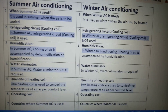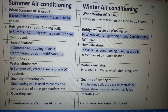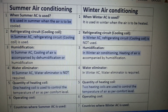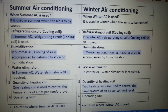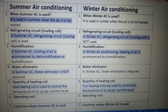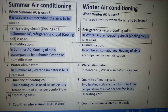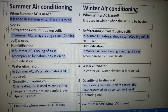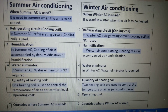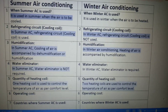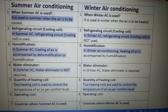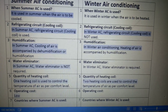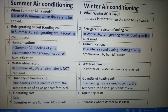Whereas in winter AC, two heating coils are used to control the temperature of air as per the comfort level. So in summer it is one heating coil and in winter it is two heating coils.